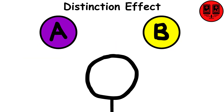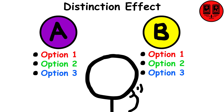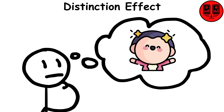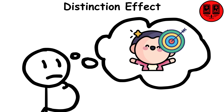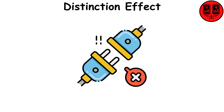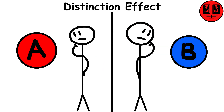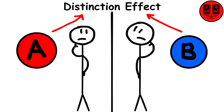Distinction bias. We have the tendency to view two options as more distinctive when we evaluate them together than when we evaluate them separately. Our predictions of what will make us happy don't always turn out to be accurate. This disconnect, in combination with our tendency to compare specific parts of the options we're given rather than form holistic impressions of each option on its own, gives rise to distinction bias.